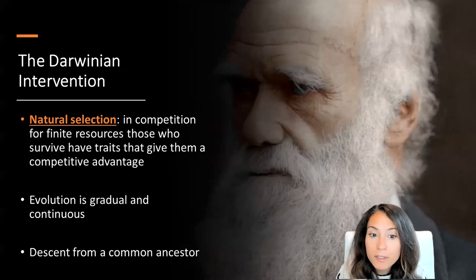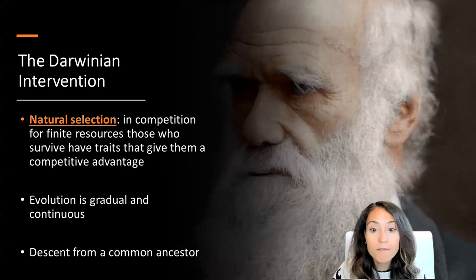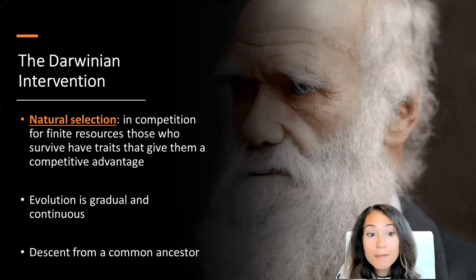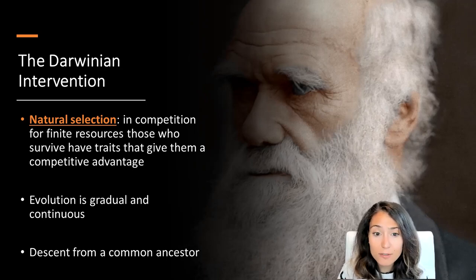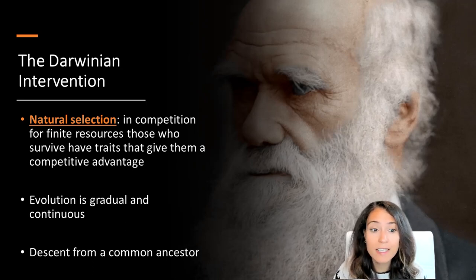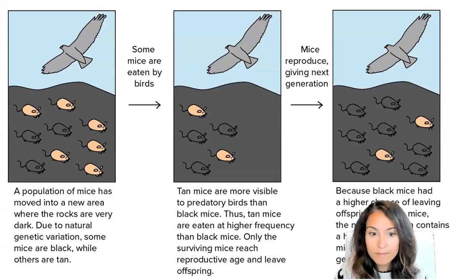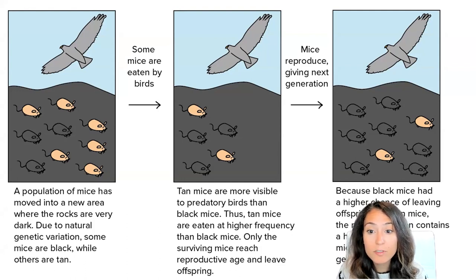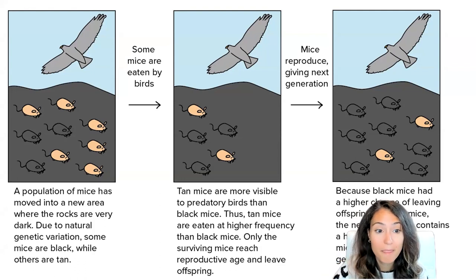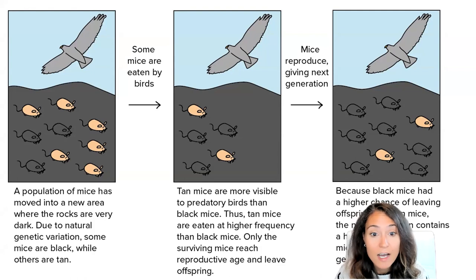The scholarly commitment to biblical frameworks began to change following the publication of The Origin of Species in 1859 by naturalist Charles Darwin. Darwin reasoned that since resources are inherently limited, the young of reproductive age struggle to survive. The survivors persist because they have traits that give them a competitive advantage. These physical variations are passed along to the next generation, so that each generation the number of individuals with advantageous traits steadily increases. The evolutionary process is gradual and continuous, eventually giving rise to new species through what Darwin called natural selection.